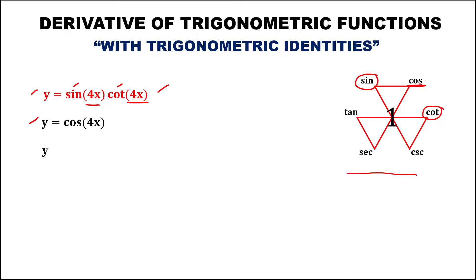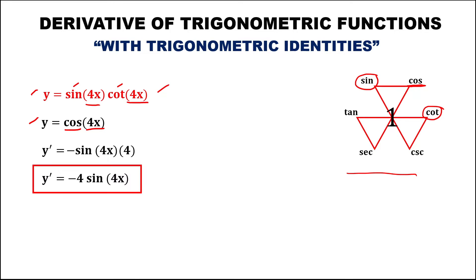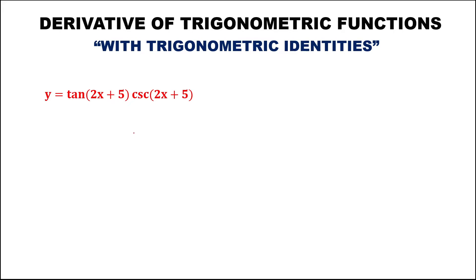Now we can find the derivative. So y prime equals the derivative of cosine, which is negative sine 4x, times the derivative of 4x, which is 4. Putting the constant first, this gives y prime equals negative 4 sine 4x.